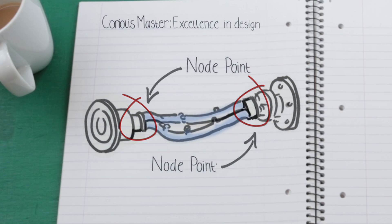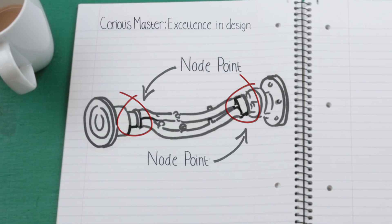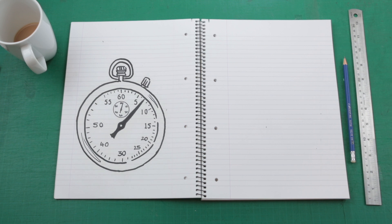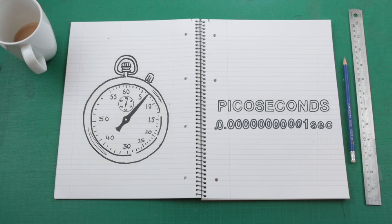This wobbling is measured by sensors at either end of the tubes. The phase difference between the sensors, measured in picoseconds, is detected, and tells us the size of the Coriolis force, which tells us the mass of fluid flowing through the tubes.